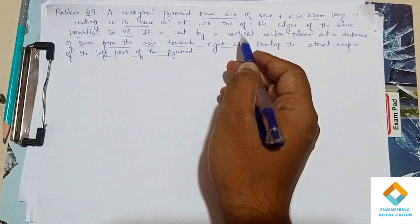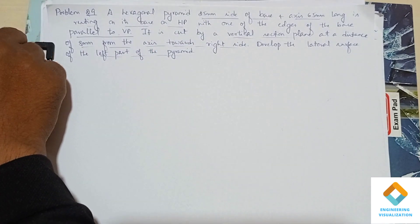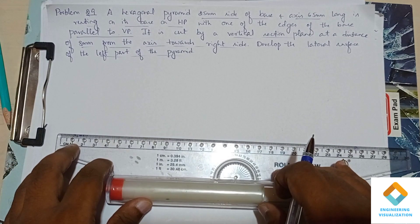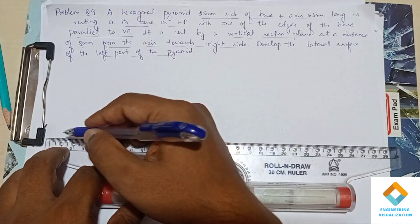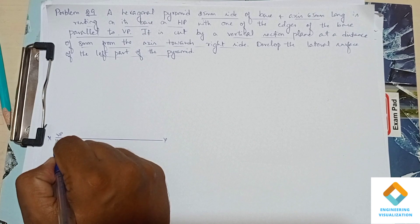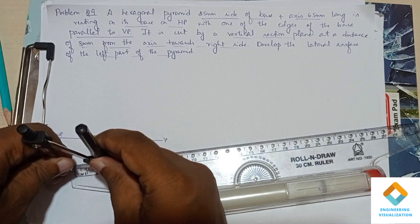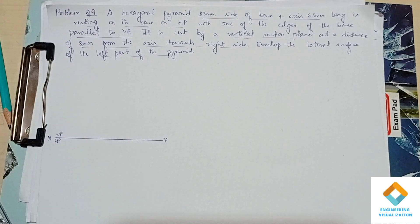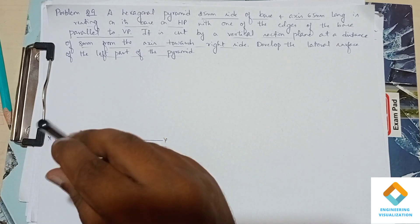First I'll be constructing a hexagon of dimension 25 and axis length 65, then after that I'm going to cut it. To construct the hexagonal pyramid, first we have to construct a hexagon of dimension 25. I'll be drawing the XY line and writing VP since it is a first quadrant. I'll be constructing the hexagon using circle method — drawing a circle with a radius of 25. Circle method is easier compared to the angle method.